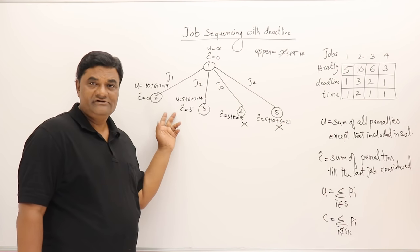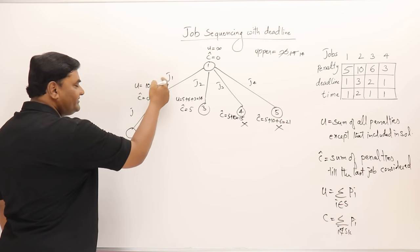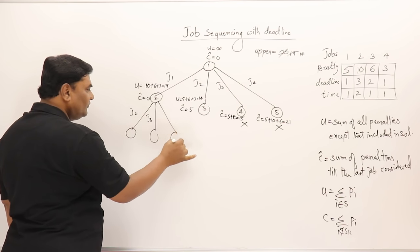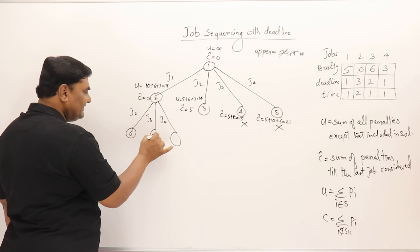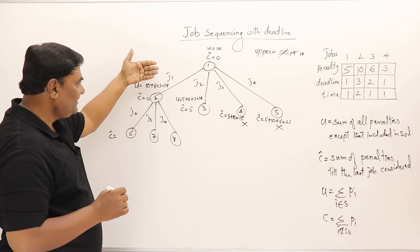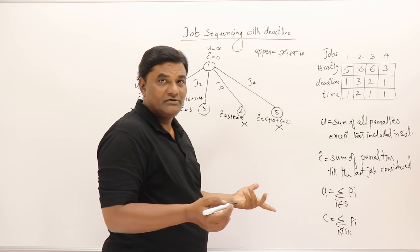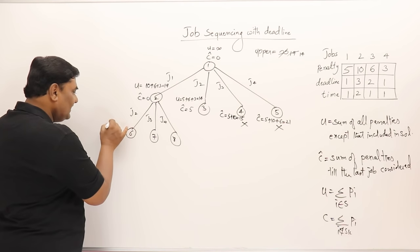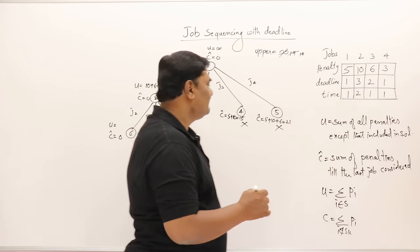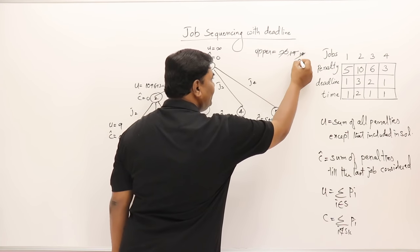Expanding the node where job one is done, we now consider job two, job three, and job four. For the node with job one and job two both included, we are skipping nothing, so cost is zero. The upper bound is the remaining penalty — job three and four: that is 9. We got a new minimum value less than 14, so we update upper to 9. For the node with job one and job three, we are skipping job two, so cost is 10. Since 10 exceeds upper bound 9, kill this node.